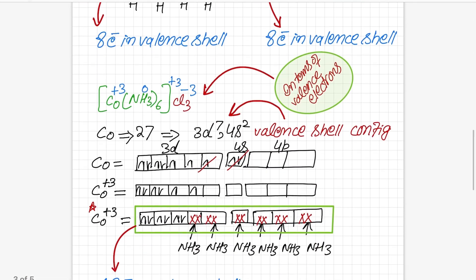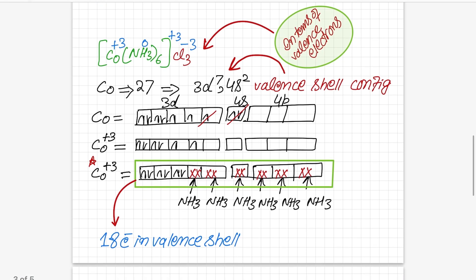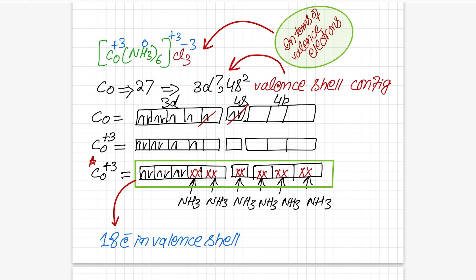Now we deal with the real question from the previous lecture. In the cobalt complex [Co(NH3)6]Cl3, we first perform charge separation: since there are three chlorides outside, the charge on the chlorides is −3, so the complex has a charge of +3 to balance. Ammonia is neutral, so cobalt itself carries +3. This is the charge separation.